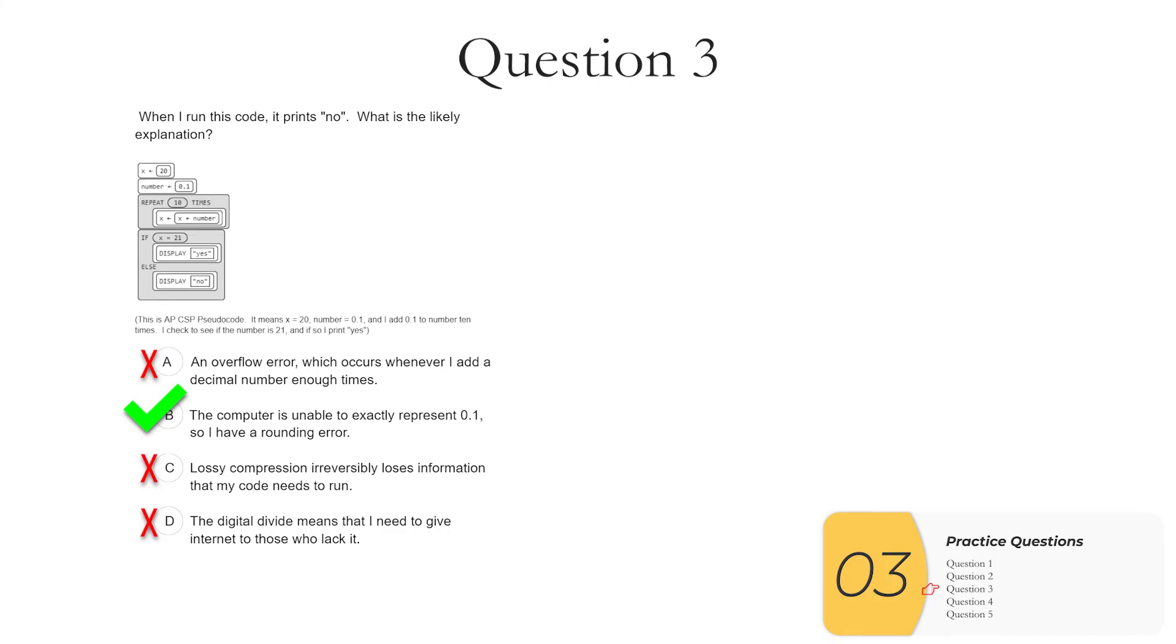Now, interestingly enough, if I do this operation in reverse, meaning that after I add 0.1 ten times, I subtract 0.1 ten times, I do get my original number back, which is 20. And that's because as I introduce errors from rounding errors going up, those errors are removed going back down. But that won't be on the exam. It's just if you're curious.